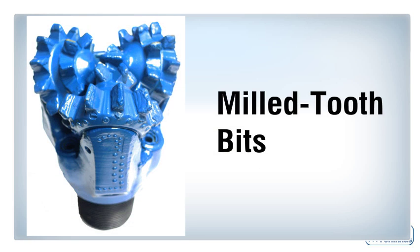Milled tooth bits have steel tooth cutters which are fabricated as parts of the bit cone. The bits cut or gouge formations out when they are being rotated. The teeth vary in size and shape depending on the formation.